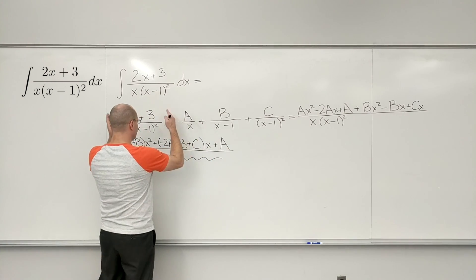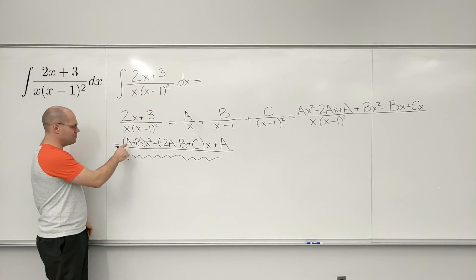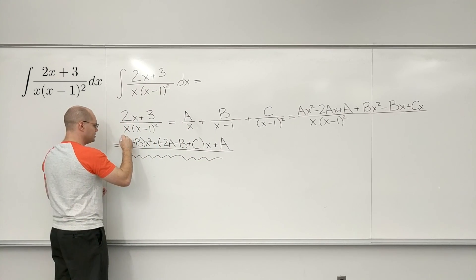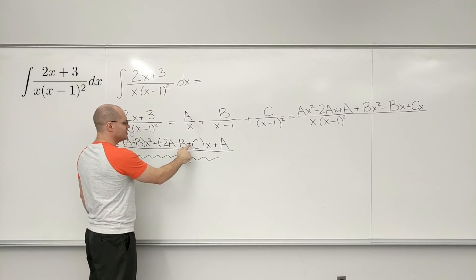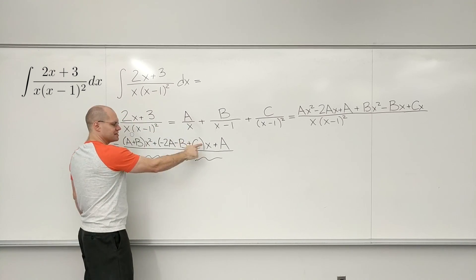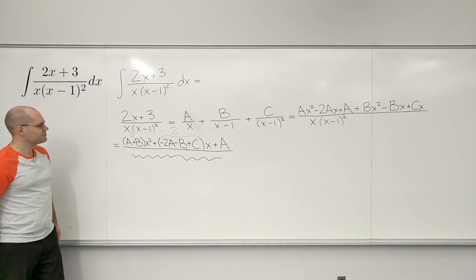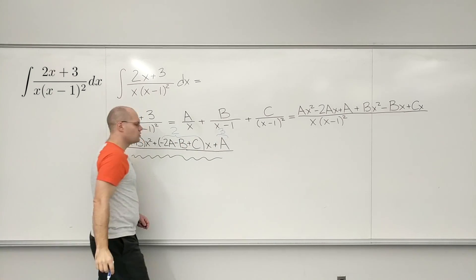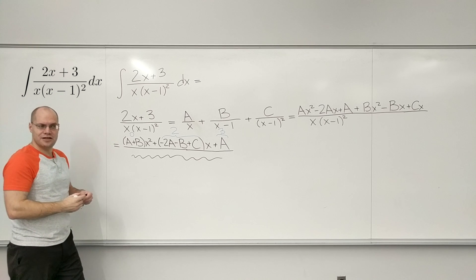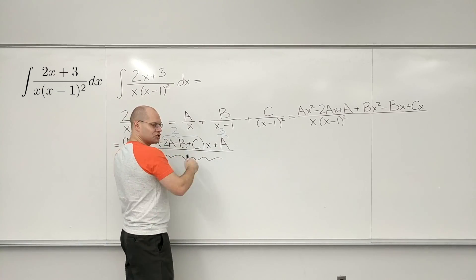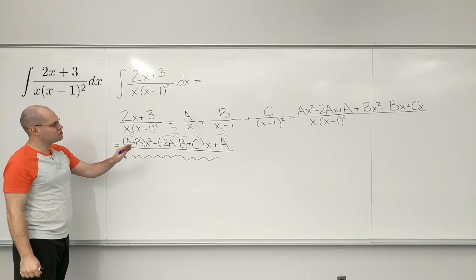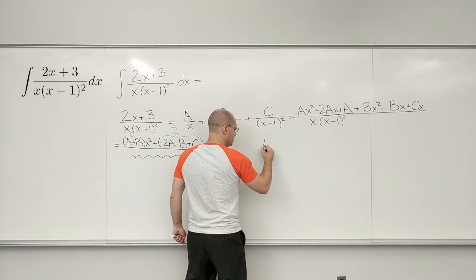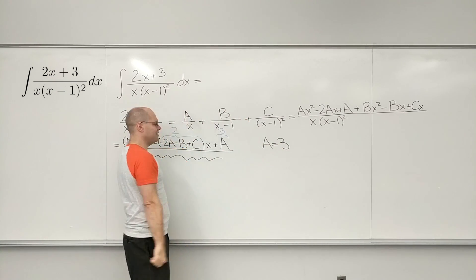So now, we have to match this up with this. So A plus B has to be zero, because there is no x squared here. So A plus B must be zero. Minus 2A minus B plus C needs to be two, because that's the linear term. And A needs to be three. So you can look at it as three equations with three unknowns, but I don't think you should look at it that way, because you can just pick out the values of the coefficients. For instance, A equals three. That's clear.